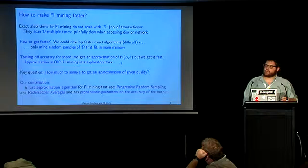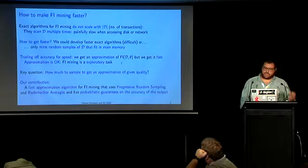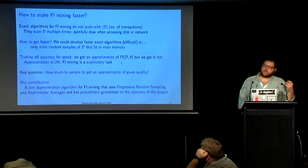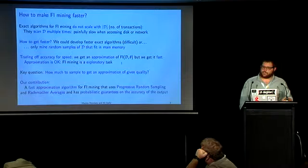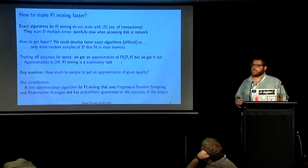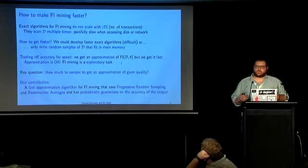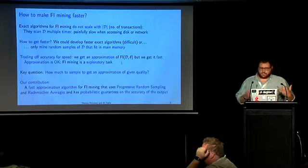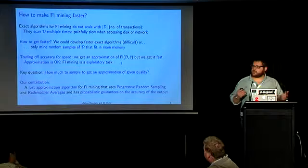One way to get faster results is to mine random samples of the dataset that fit into memory, so we no longer have to access the disk or the network, and we can just run in main memory. Since we are only analyzing a subset of the transactions, we are going to get approximate results — we trade off accuracy for speed. We get an approximation of the set of frequent itemsets, but we get it fast. This is actually okay because frequent itemset mining is an exploratory task; we really just want to know what's going on in the data to then perform other analysis. Also, the minimum frequency threshold theta is often chosen somewhat arbitrarily, and a small change in theta may really change the result.